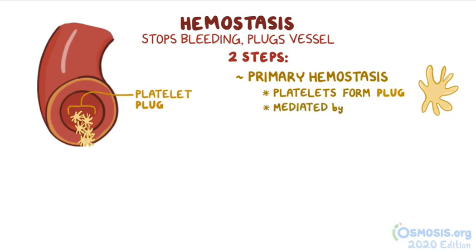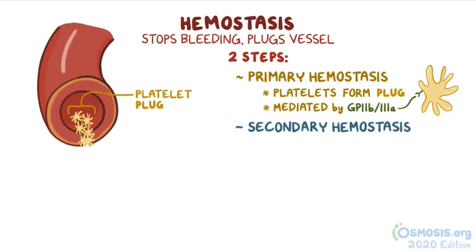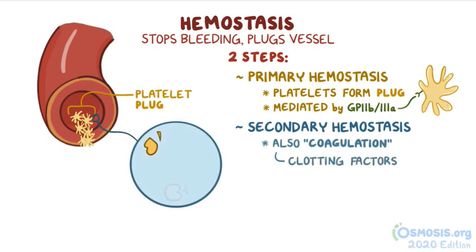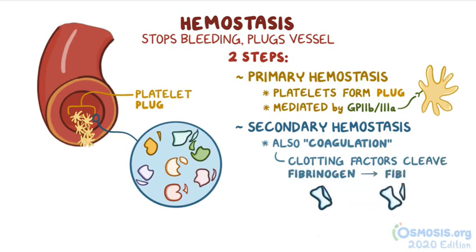Platelet aggregation is mediated by surface proteins found on platelets called GP2b3a receptors. While these platelets are aggregating, secondary hemostasis kicks in. Secondary hemostasis is also called coagulation, because that's when clotting factors come into play one after another, with the ultimate goal of cleaving fibrinogen into fibrin.